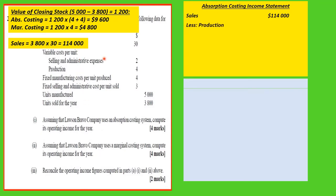The production costs are 5,000 units by $8, which is $40,000. The closing inventory is $9,600. So the cost of sales is $30,400, giving a gross income of $83,600.